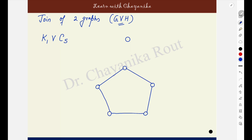After you have drawn both the graphs individually, the idea is: to find the join, you make every vertex of one graph adjacent to all the vertices of the other graph. Suppose this is my first graph G1 and this is the other graph G2. To get the join of the two graphs, I will make every vertex of G1 adjacent to every vertex of G2.